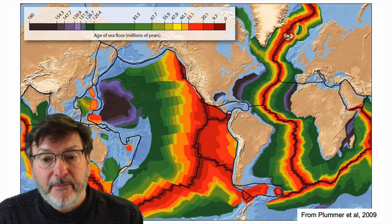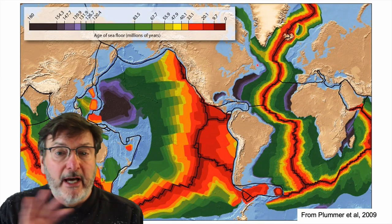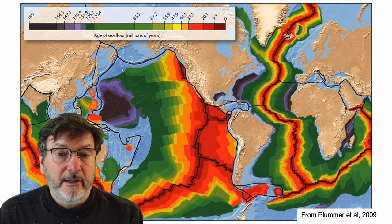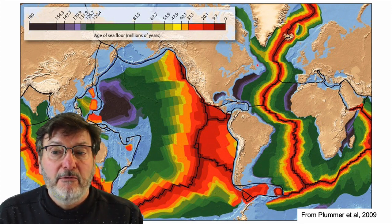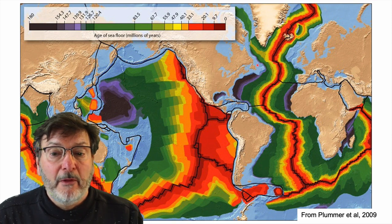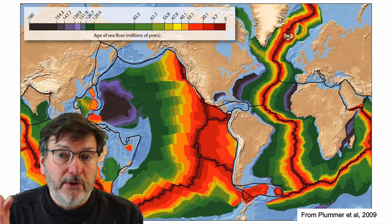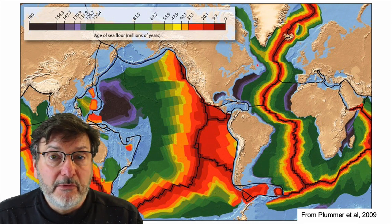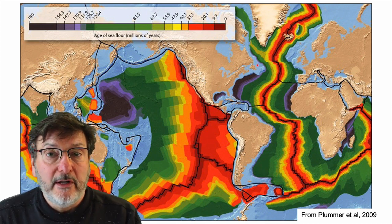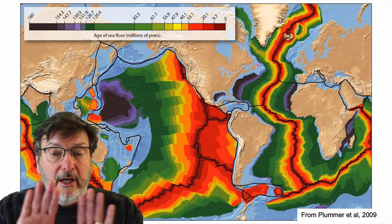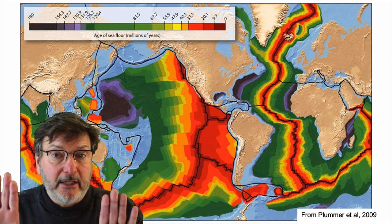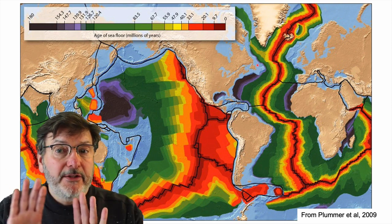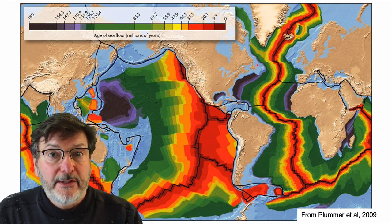We often think about spreading in a flat map view — the approximate ages of the seafloor plotted in map view, with the youngest crust on the mid-ocean ridge and progressively older crust farther away. On a flat surface, spreading away from the axial valleys could just occur laterally and horizontally at the same rate. But on the spherical earth, that's a problem. Movement of the lithosphere on a sphere is really complex.